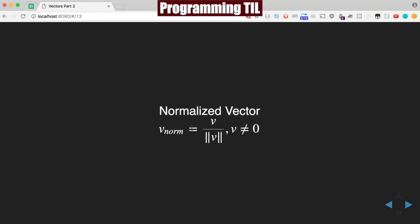To compute the normalized vector, the norm is the vector divided by the magnitude of the vector, when the vector is non-zero.